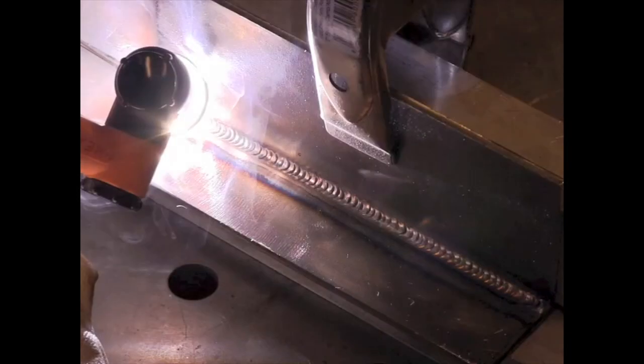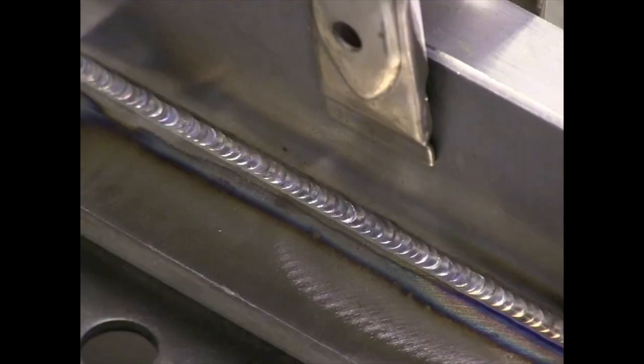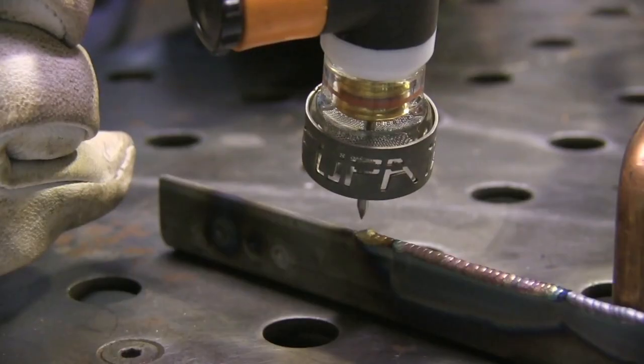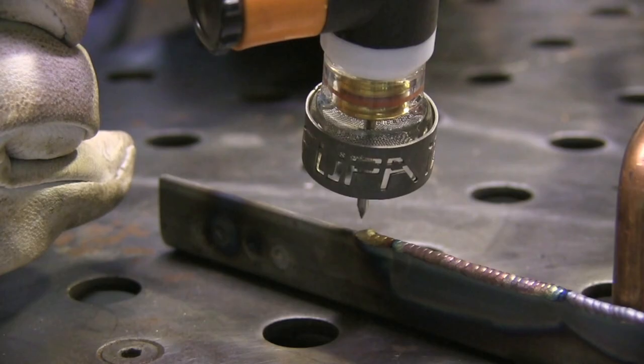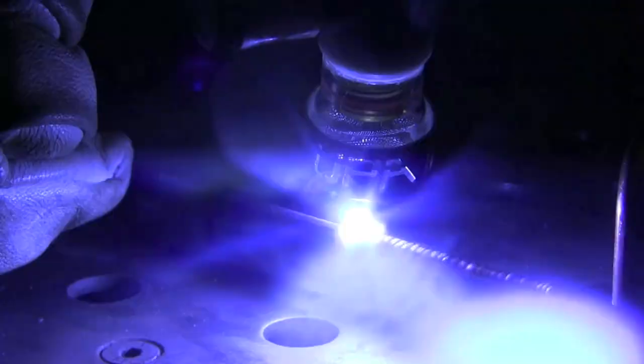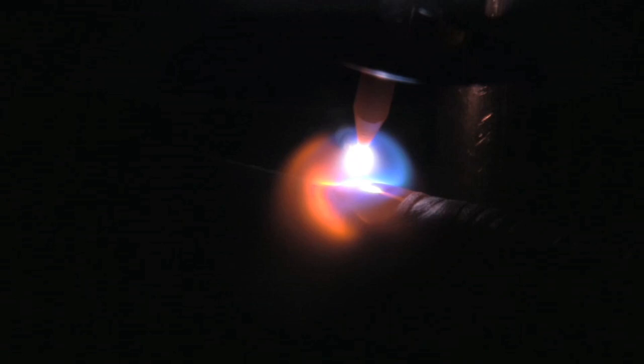You can see that whole big argon shielded area all around the weld there. A fillet weld like this will help trap argon so it's not that difficult to get good shielding. But on an edge weld like this, the edge wants to split the argon shield and so having a big blanket of argon gas really helps.